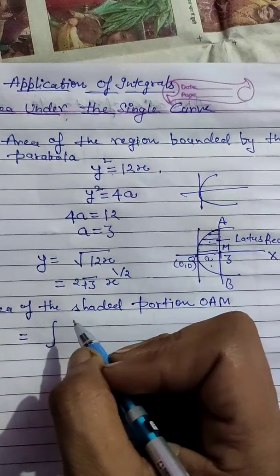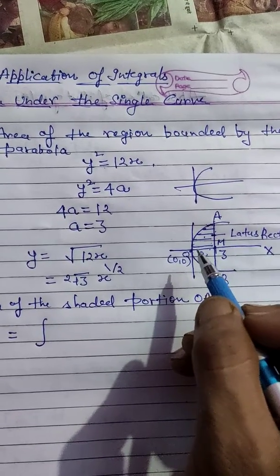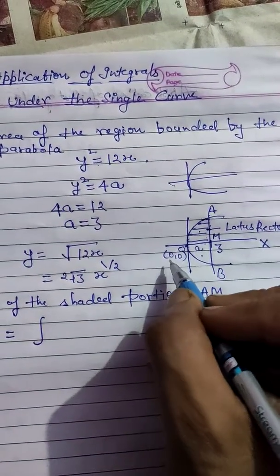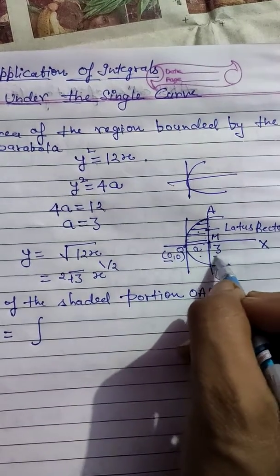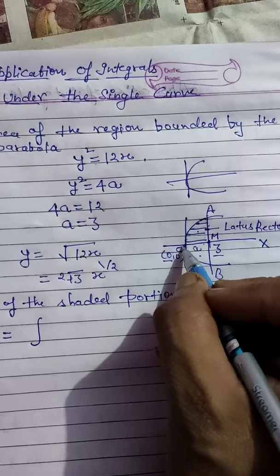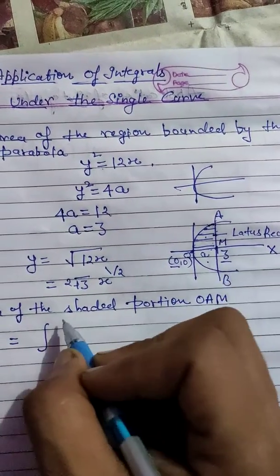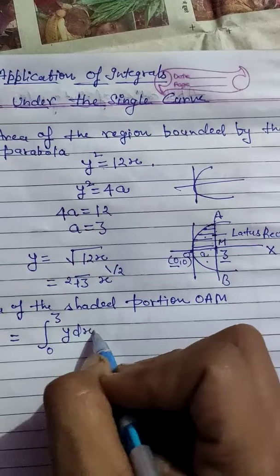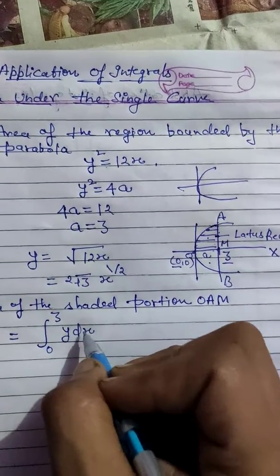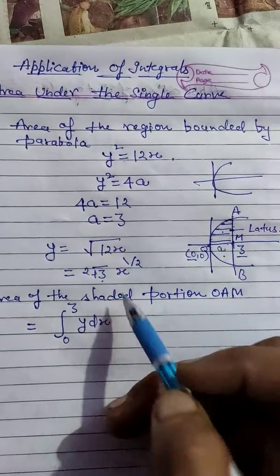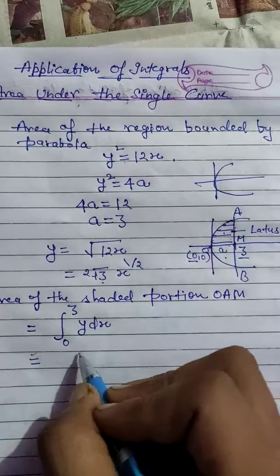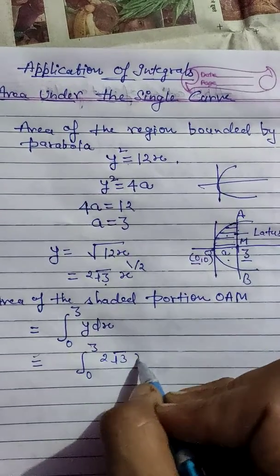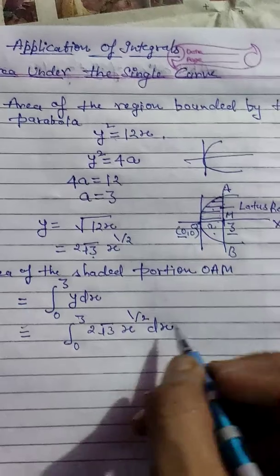Since this is a right-handed parabola, its axis of symmetry is the x-axis. I'll integrate with respect to x, taking limits from 0 to 3 — where 0 is the x-value at the origin and 3 is the x-value at point M. The integral is from 0 to 3 of y dx, where y is a function of x.